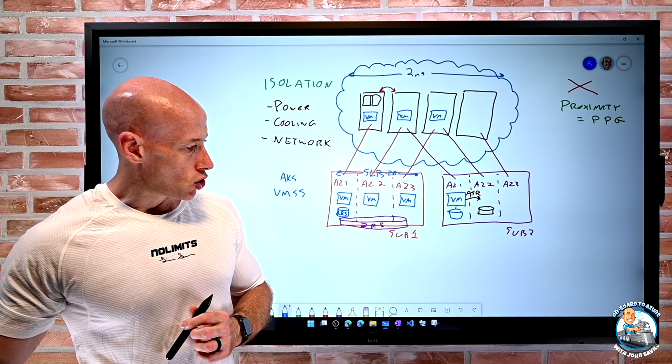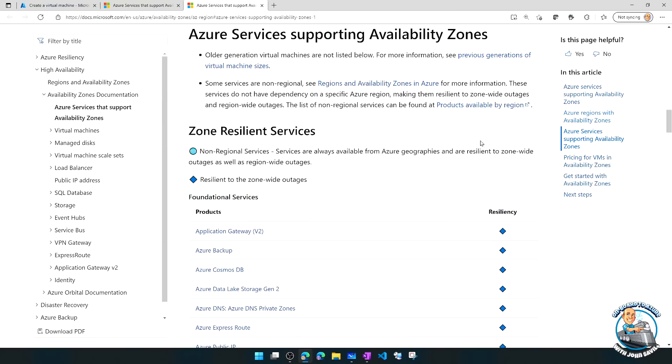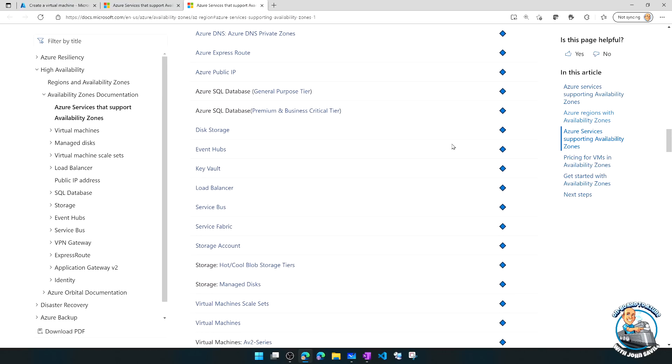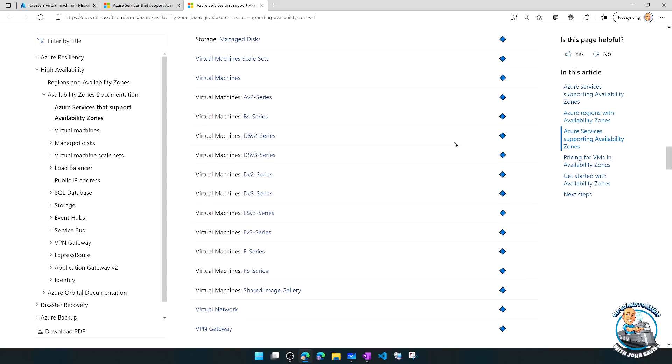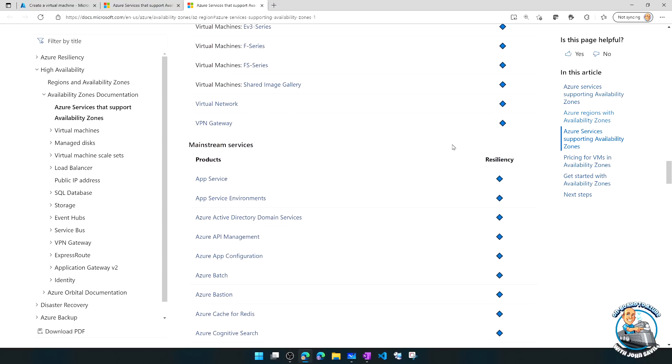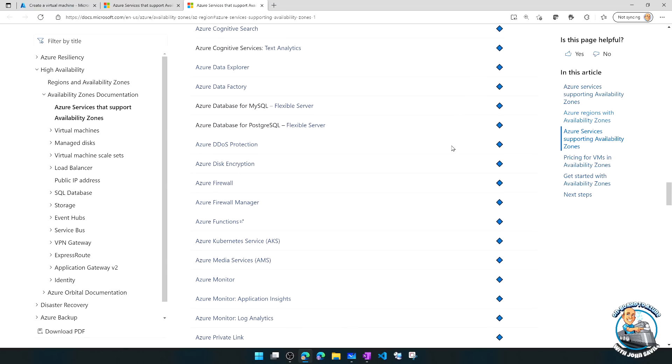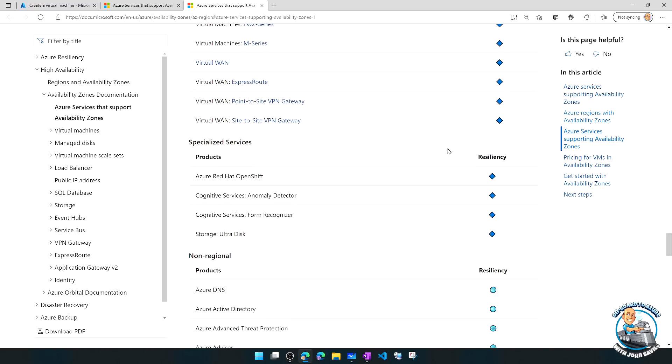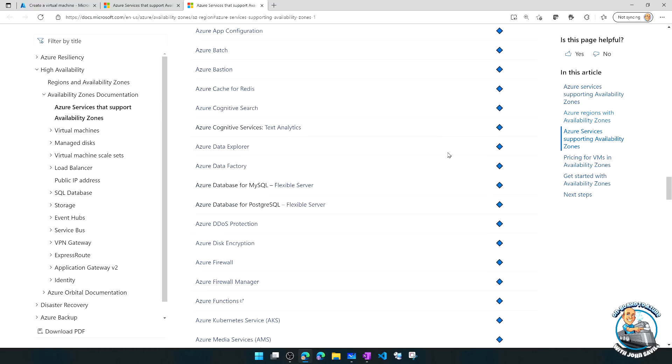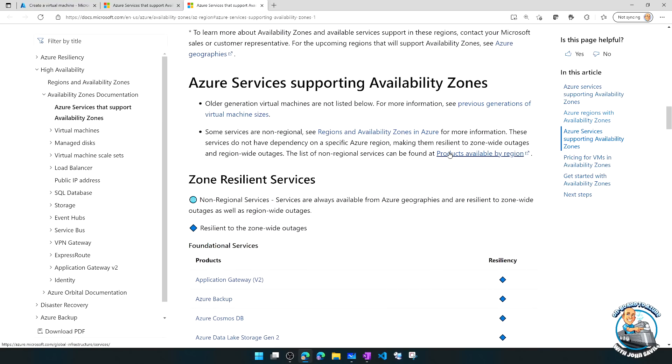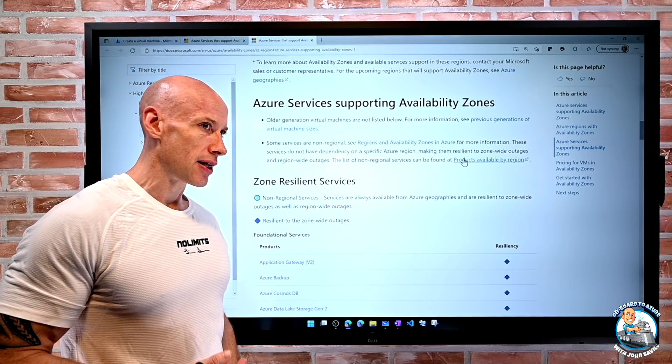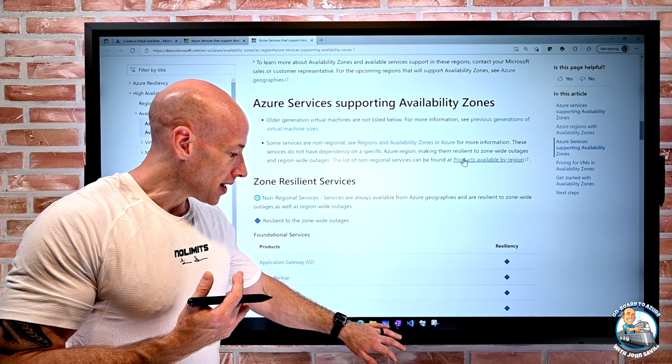In terms of the services that do actually support availability zones, so here in this article, and I've got this in the description below, it tells us zone resilient services. There are a lot of them. So these are all things I can deploy super easily and they will just be zone redundant. So it will take care of a lot of the work for me to make sure it's resilient. So just look at this when I'm planning out my overall solution to make sure I'm not introducing some single point of failure. And then some services are just global. Azure AD, Traffic Manager, Front Door, for example, they're not pinned to a region anyway.